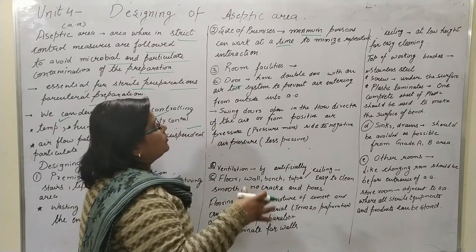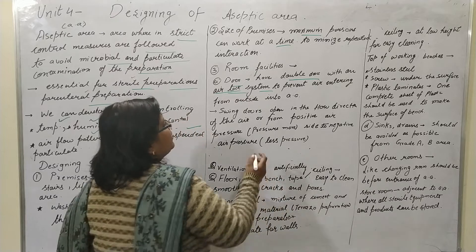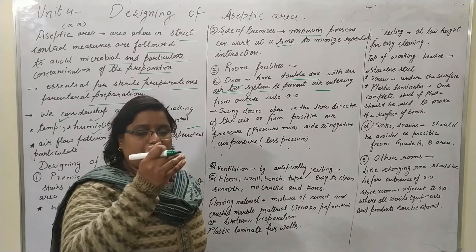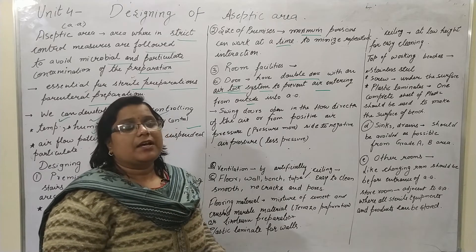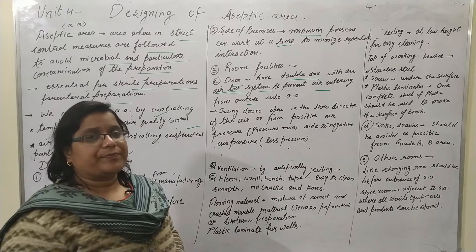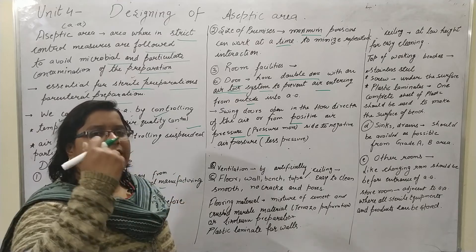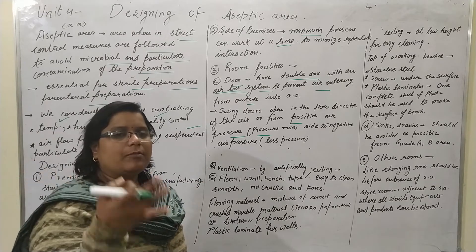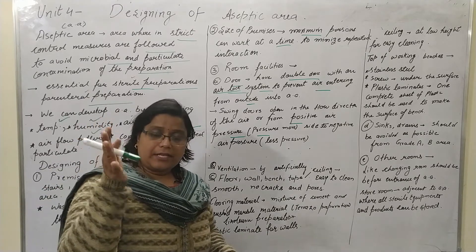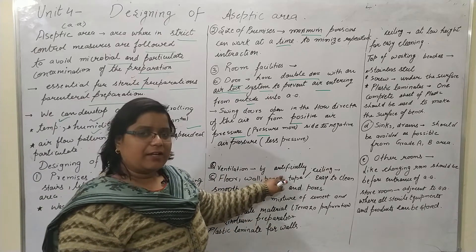Regarding room facilities, the door should have a double-door system with a proper airlock system to prevent outside air from entering the aseptic area. The air pressure inside the aseptic area is maintained higher than the outer area — this is positive pressure. Since air flows from high pressure to low pressure, air moves from inside to outside, so contamination proceeds outward automatically.